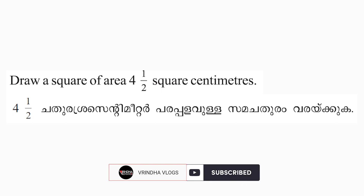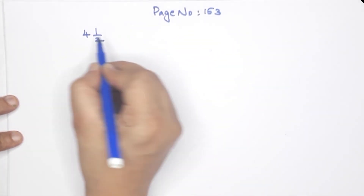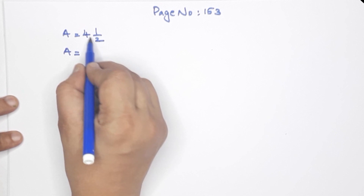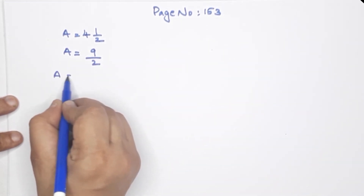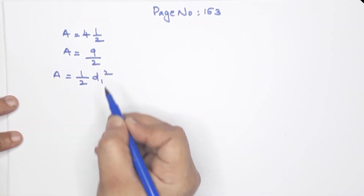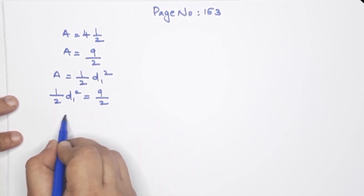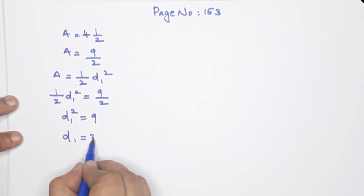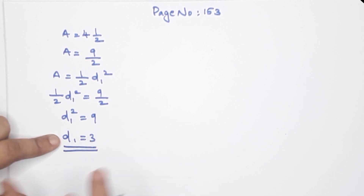Page number 153, first question: draw a square of area 4 and a half square centimeters. Area equals 4 and a half equals 9 by 2. Using the diagonal area formula: half D1 squared equals 9 by 2. Therefore D1 squared equals 9, so D1 equals 3cm. The diagonal is 3cm.